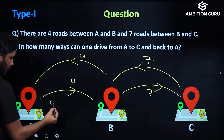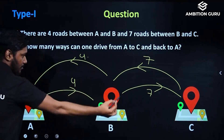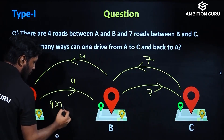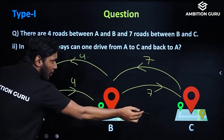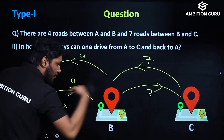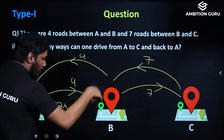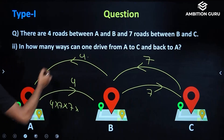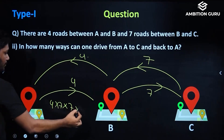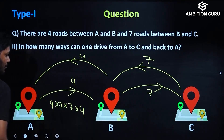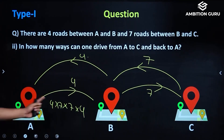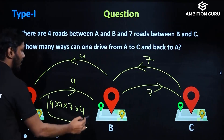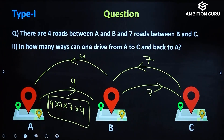A to B, how many ways? 4. Then multiply by 7. Then we reached C, then came back to B — so again how many ways? 7 ways. B then again to C, then again multiply. So this is your answer: 4 into 7 into 7 into 4. That is your answer.